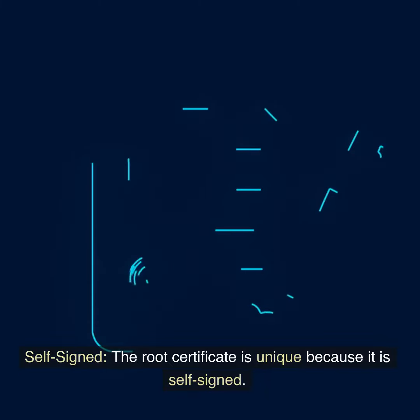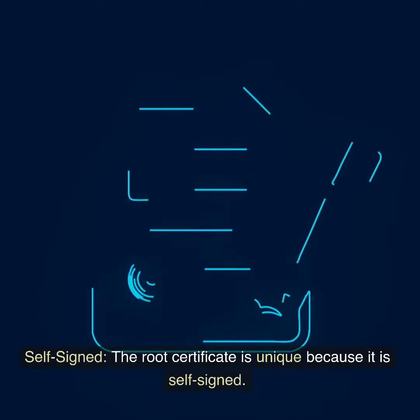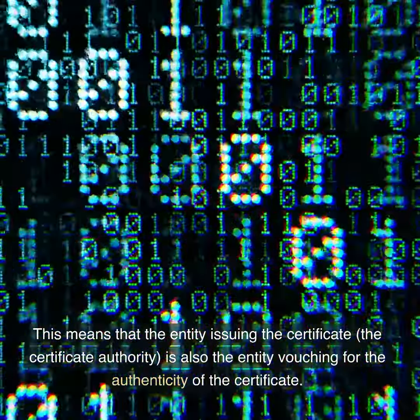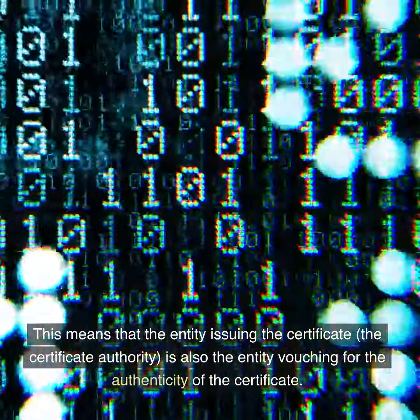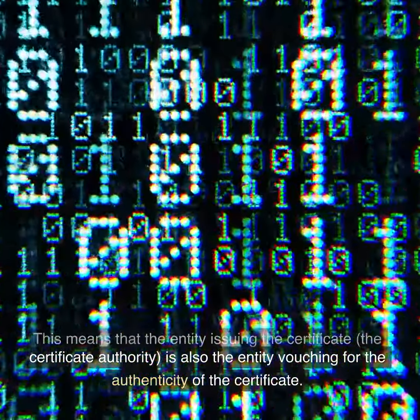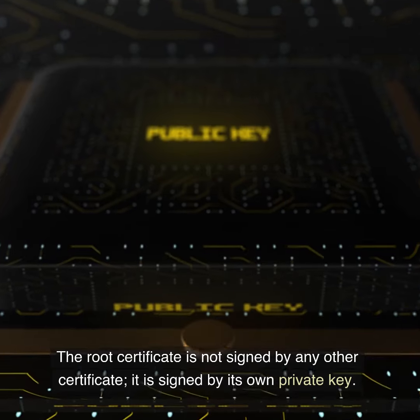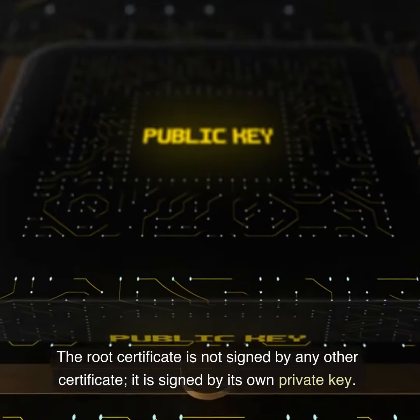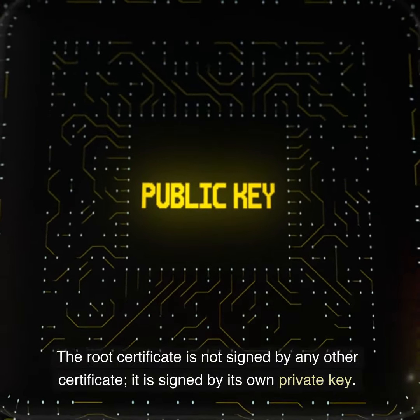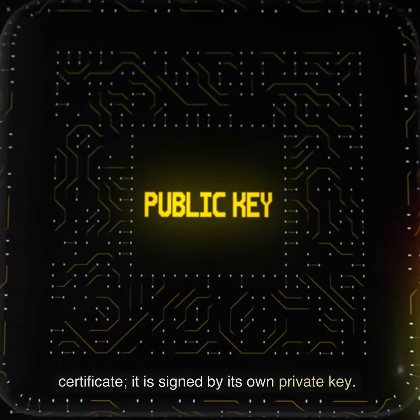Self-signed: the root certificate is unique because it is self-signed. This means that the entity issuing the certificate — the certificate authority — is also the entity vouching for the authenticity of the certificate. The root certificate is not signed by any other certificate; it is signed by its own private key.